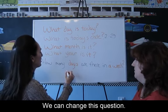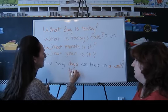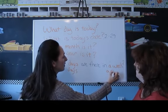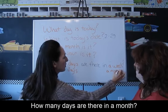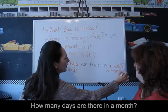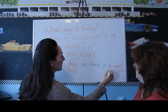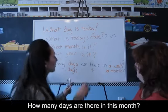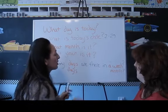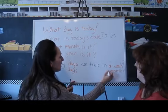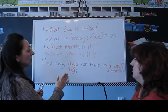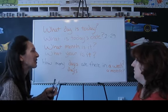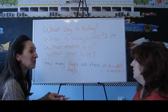We can change this question: how many days are there in a month? Or you might say, how many days are there in a specific month — in this month, in February, in March. So one question could be: how many days are there in a month? It could be 28, 30, or 31.